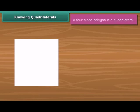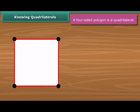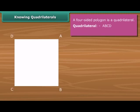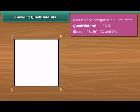The page of a book is called a quadrilateral. It has four sides, four vertices and four angles. In quadrilateral ABCD, four sides are AB, BC, CD and DA.